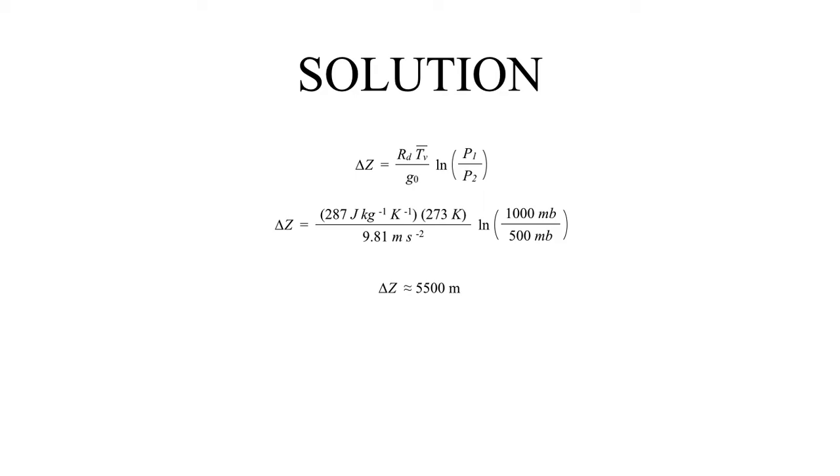This result is actually not insignificant because there is a rule of thumb that forecasters like to use, especially when it comes to forecasting winter weather events. One of the tools that forecasters like to use is to look at the thickness between the 500 millibar and the 1,000 millibar levels.